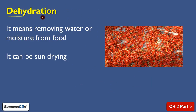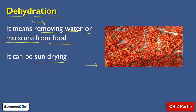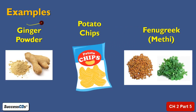The first method is dehydration. Dehydration means removing water or any kind of moisture from food. How can you do it? By sun drying. For example, these are all red chillies — you sun dry them to make red chilli powder. The simple method of dehydration is sun drying. Other examples include ginger powder, potato chips, and methi seeds — we can dehydrate them and preserve them.